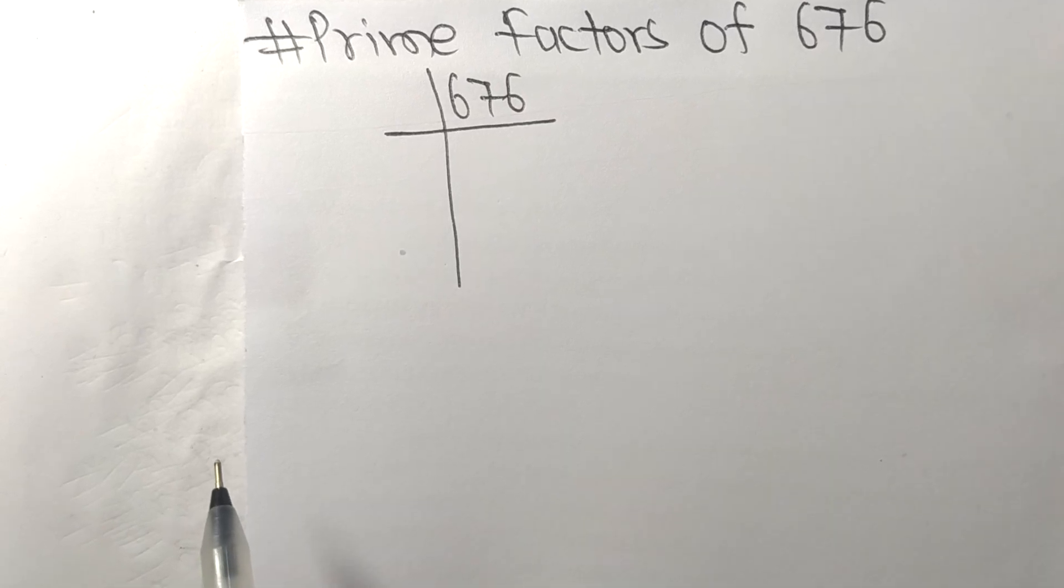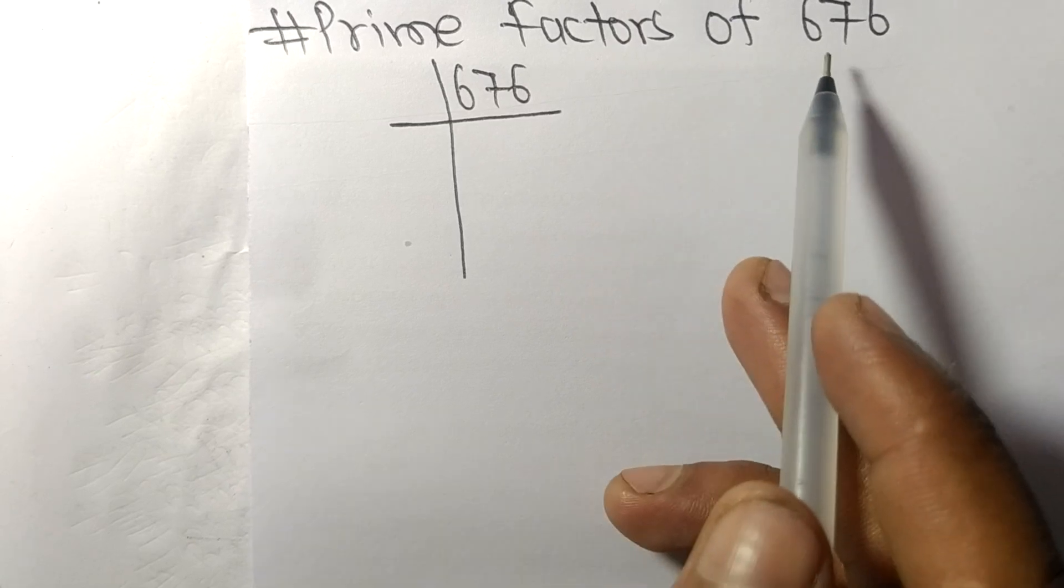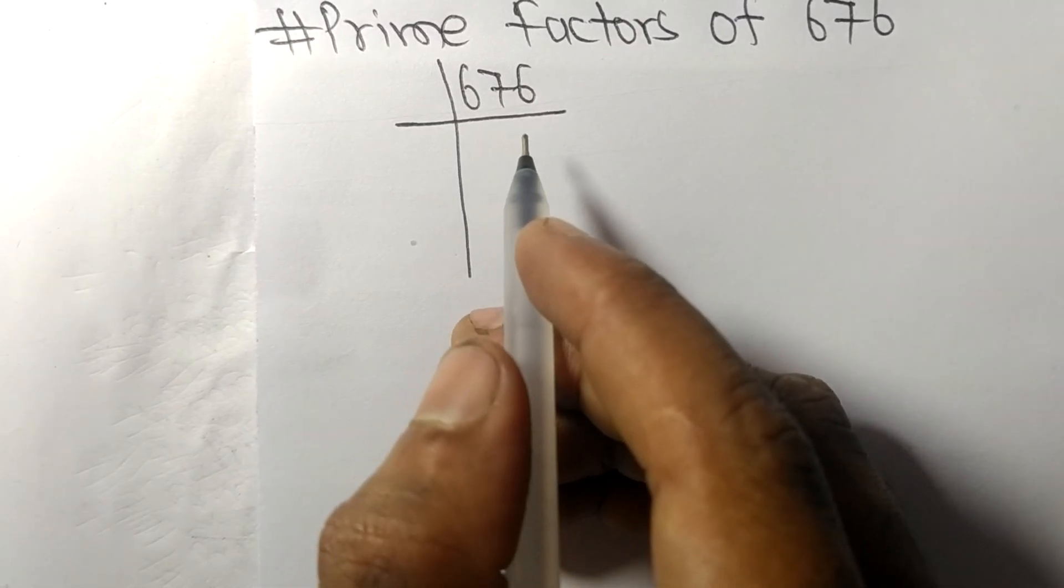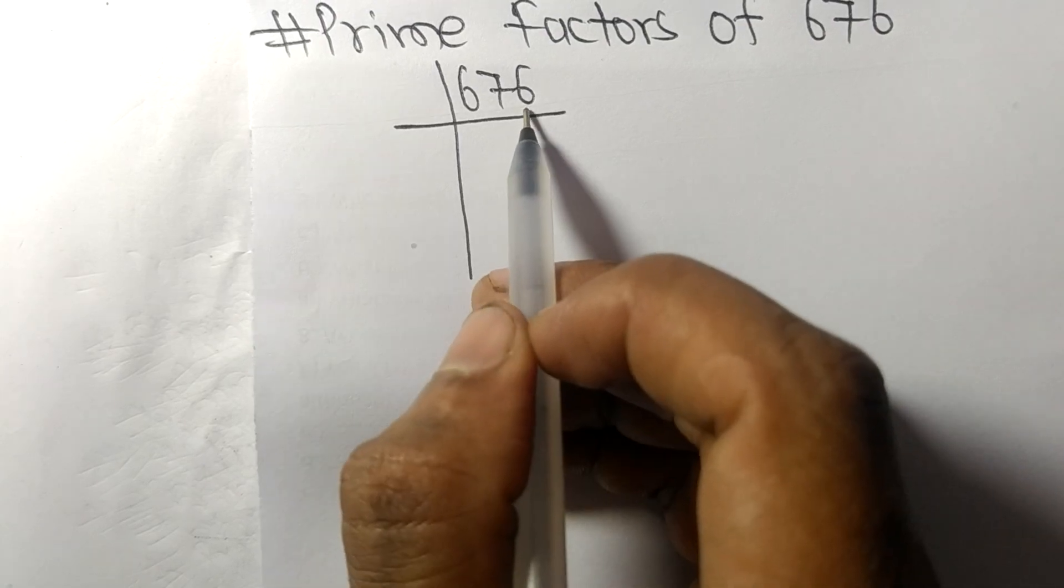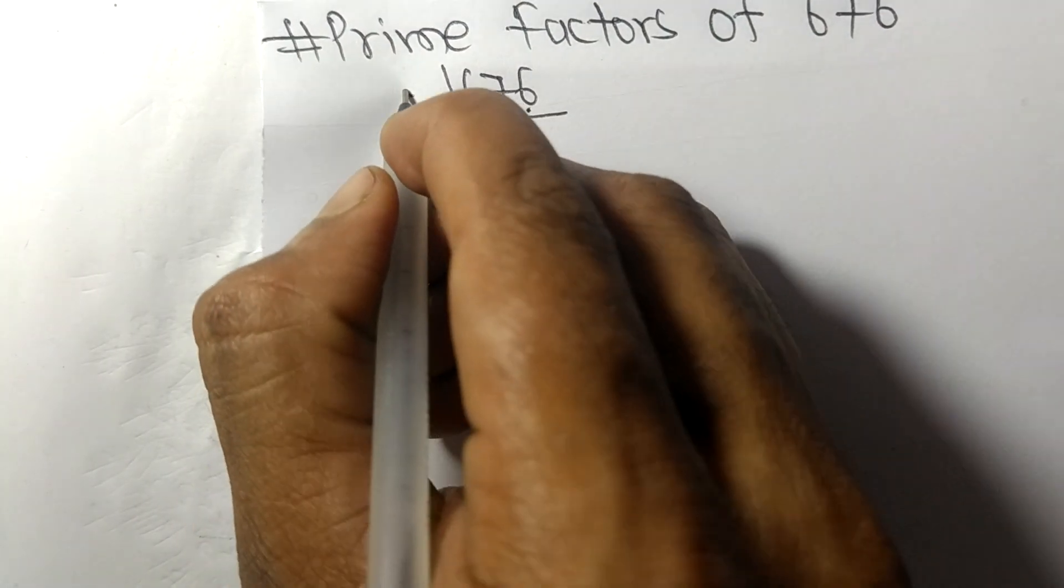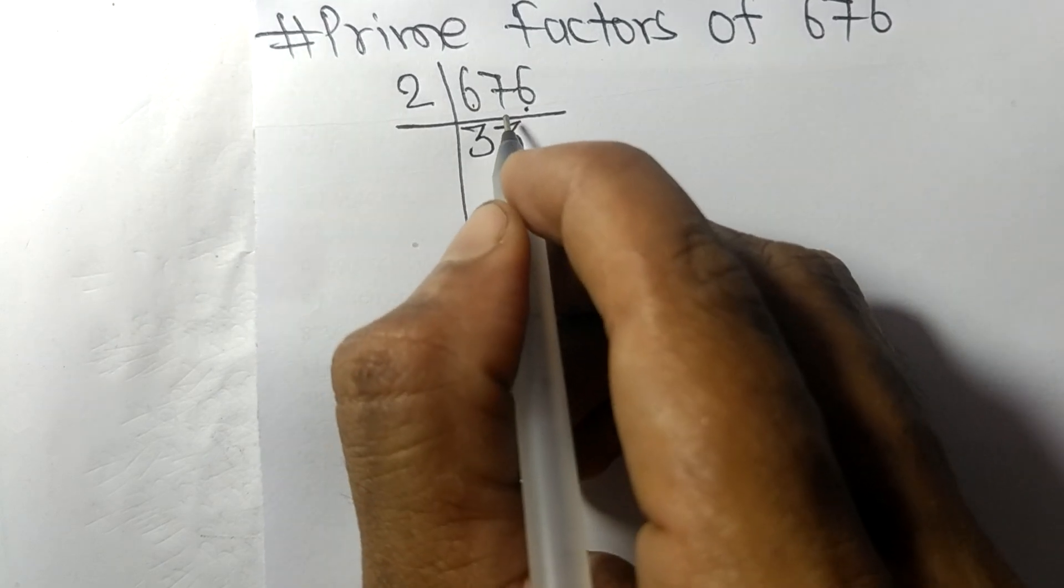So today in this video we shall learn to find the prime factors of 676. At the last it contains an even number 6, so this whole number is divisible by 2. 2 times 3 equals 6.